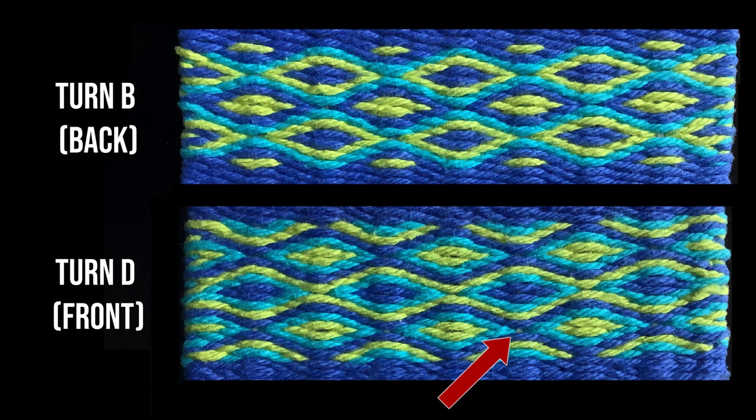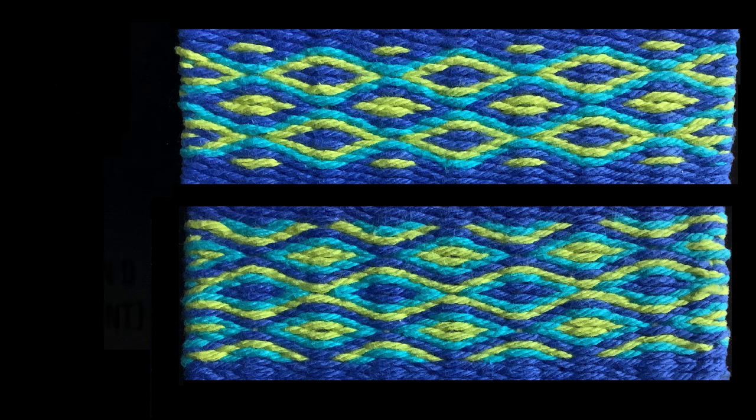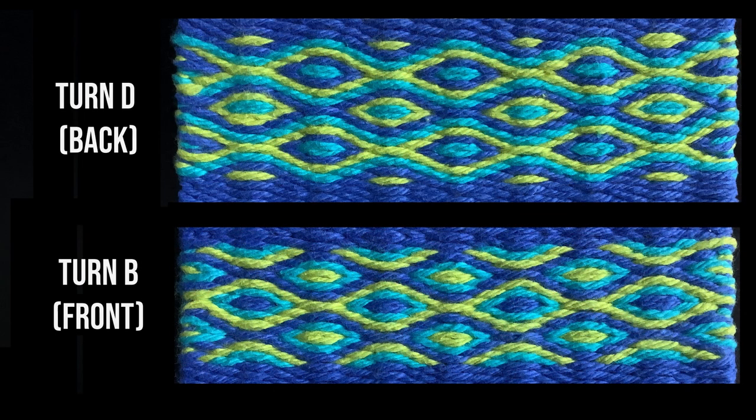So remember those warp threads peeking through with the last turn type we did? This means you may get them peeking through on the back of your work too if you use the B type turn, unless you use an extra hard beat. That's fine, but beating too hard will tend to flatten out the curves of the pattern and make it super stiff, so you may not always want to do that.